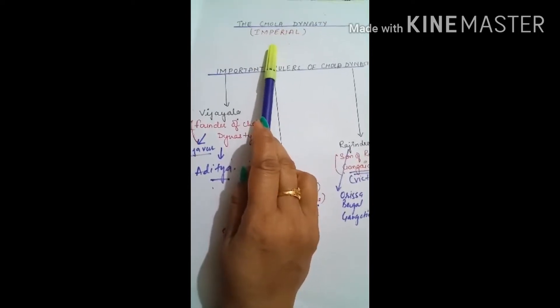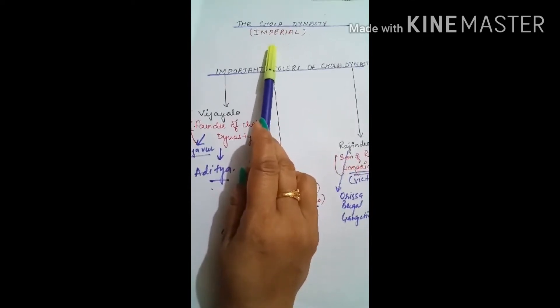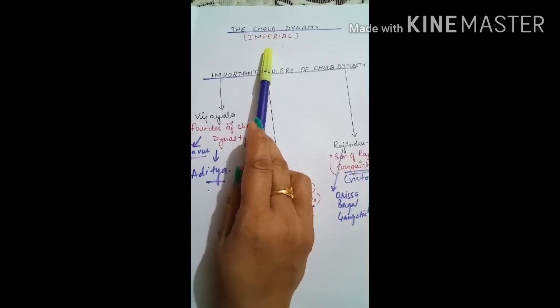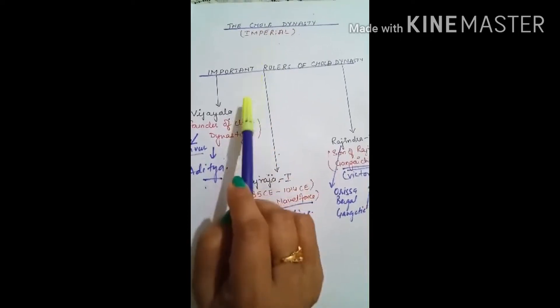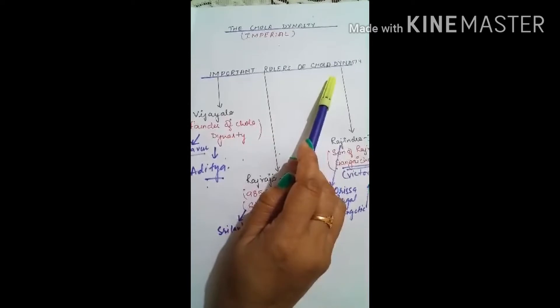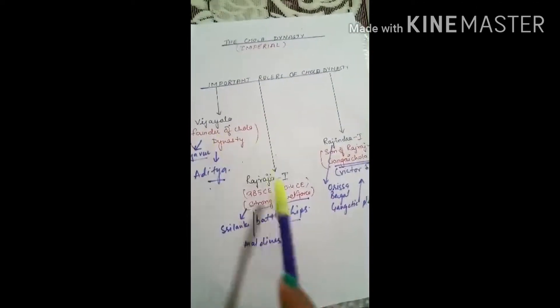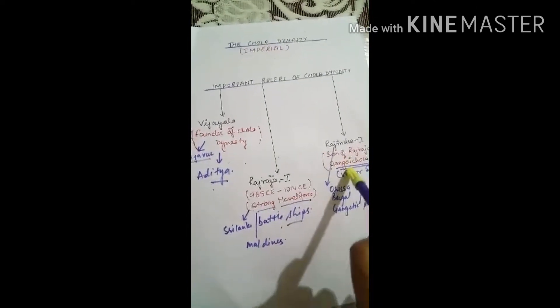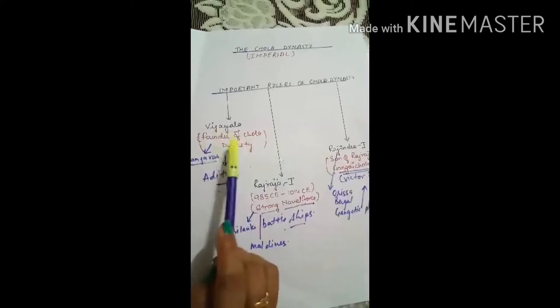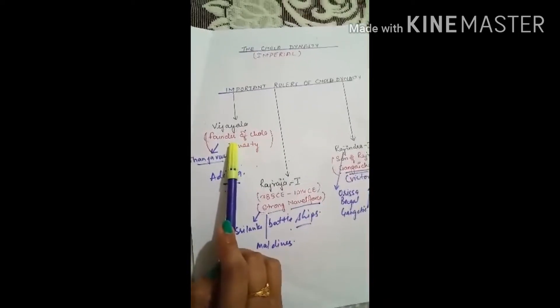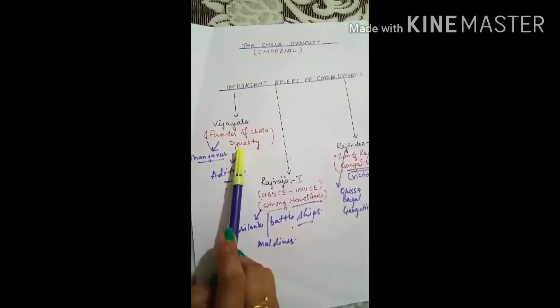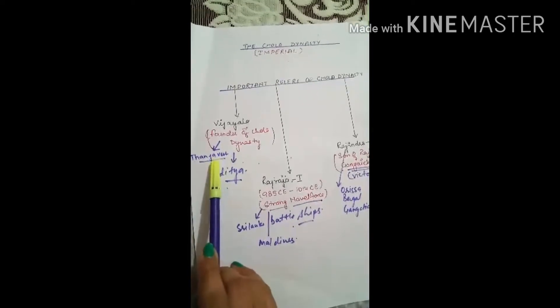Imperial Cholas came about in South India. The prominent and important rulers of Chola dynasty were Vijayala, Raj Raja first, and Rajendra first. We'll start with Vijayala, who was the founder of Chola dynasty and he made his capital at Thanjavur.